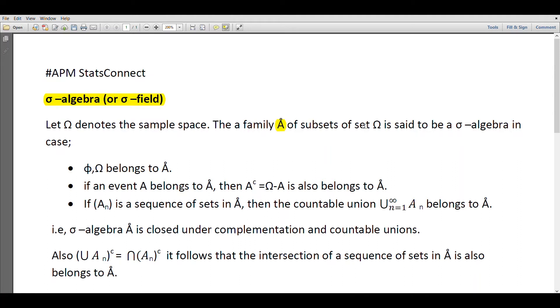The null set φ and the sample space Ω itself belong to A. If an event A belongs to A, then A complement, which equals Ω minus A, also belongs to A.